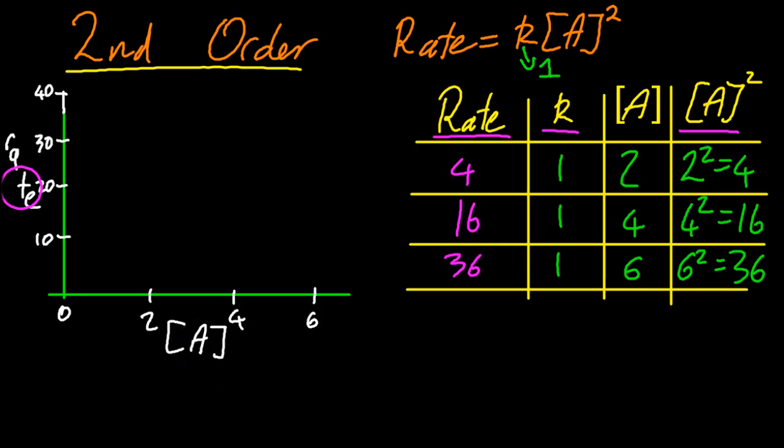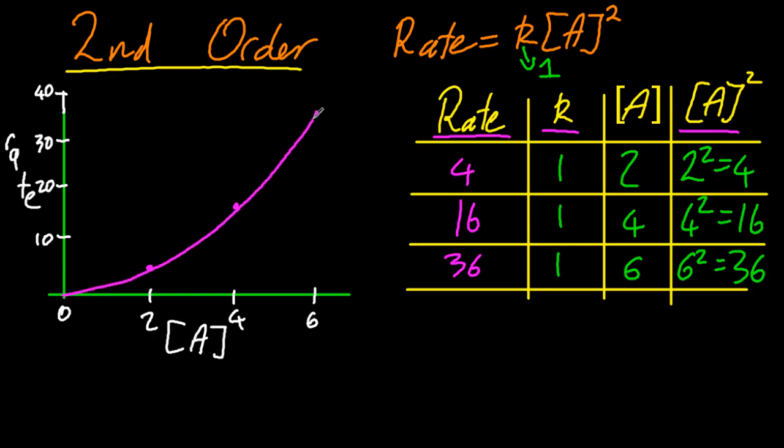Rate against A. 4, 2, 16, 4, and 36, 6 on my graph. I get this sweeping up curve. And that's a classic second order. So at high concentrations of A, I had very, very high rates.